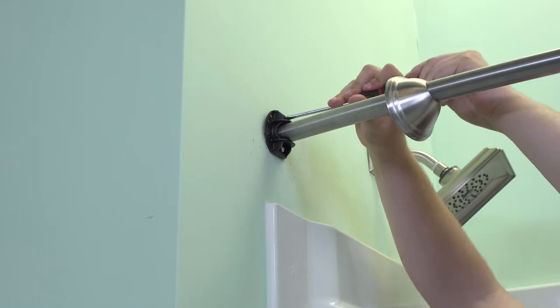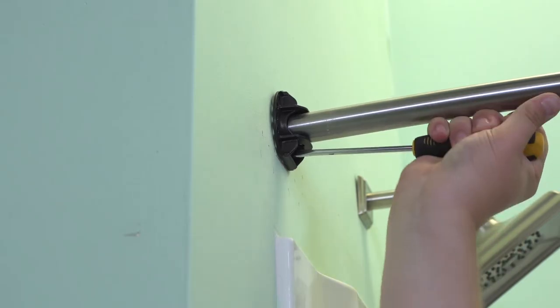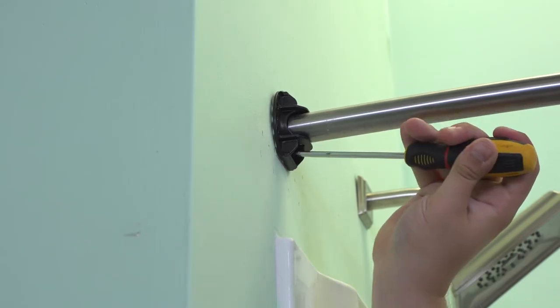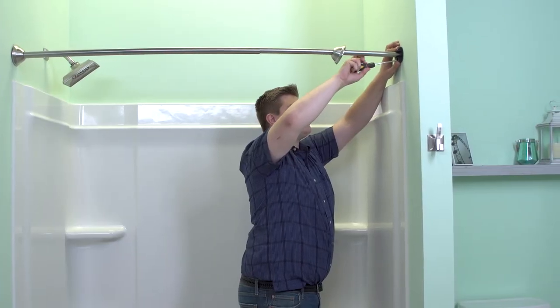Insert the provided screws through the first mounting post. Tighten the screws until you feel increased resistance. Expand the rod and install on the opposite end.